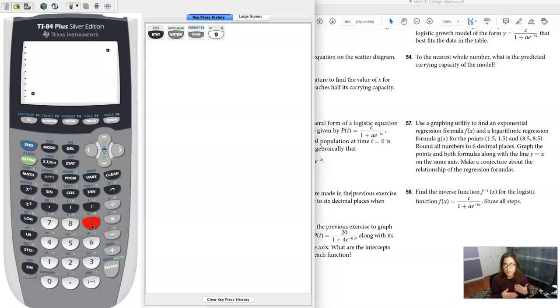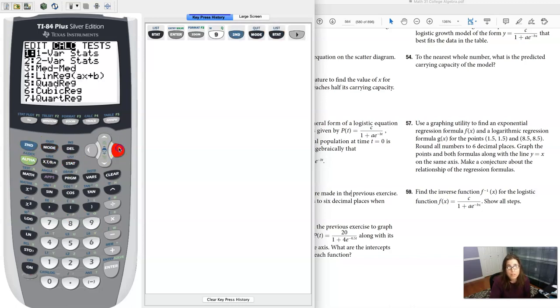Now just based on two ordered pairs this could be any kind of growth. It actually looks linear to me but we weren't directed or instructed to make a linear regression model. We were told go exponential and logarithmic, so I'm going to do that. Let me go back to my home screen and let's do the exponential one first.